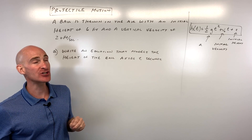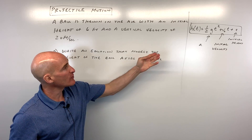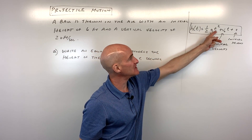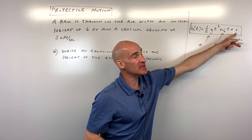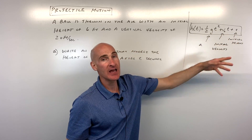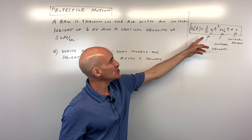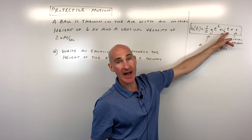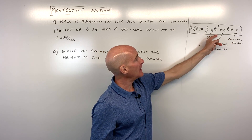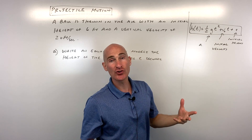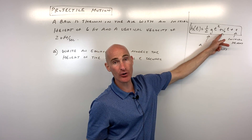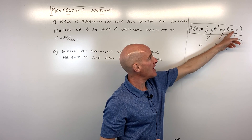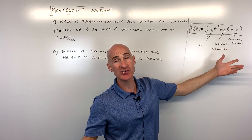We're going to go through a three part question and we're going to be working with this formula: h of t equals one half g t squared plus v-naught t plus s. Here, g is the acceleration due to gravity, t represents the time, v sub zero is the initial velocity at time zero — like when it leaves your hand when you throw the object into the air — and s represents the initial height or the starting height.